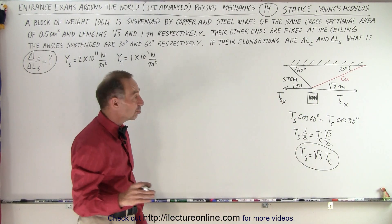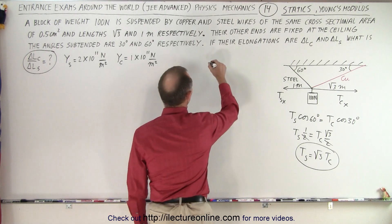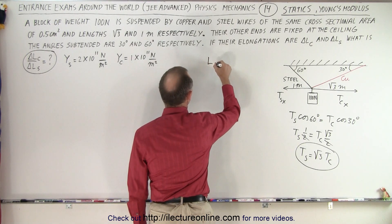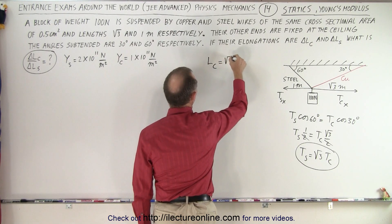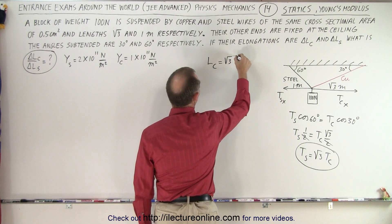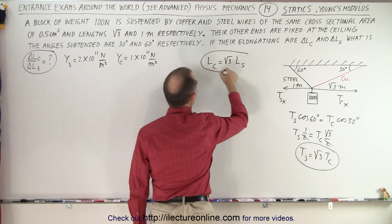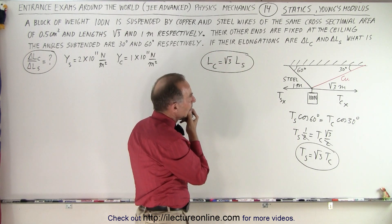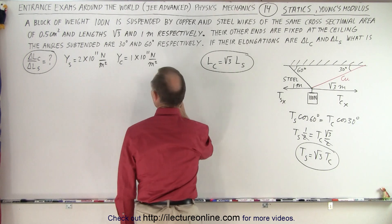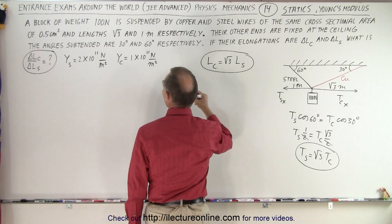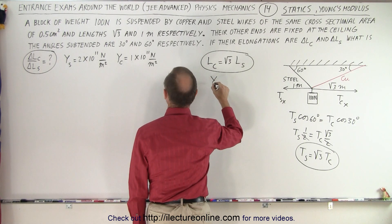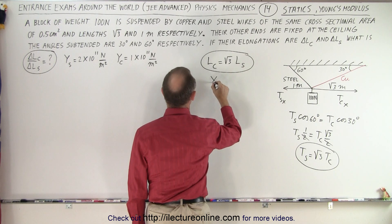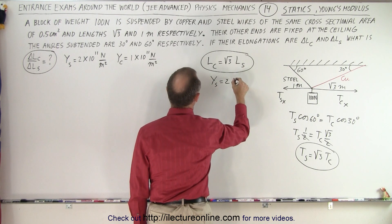We also need a relationship between the lengths of the two wires. We can say that the length of the copper is equal to the square root of three times the length of the steel. And we also need a ratio of the Young's moduli. We can see here that the Young's modulus of the steel is equal to two times the Young's modulus of the copper.